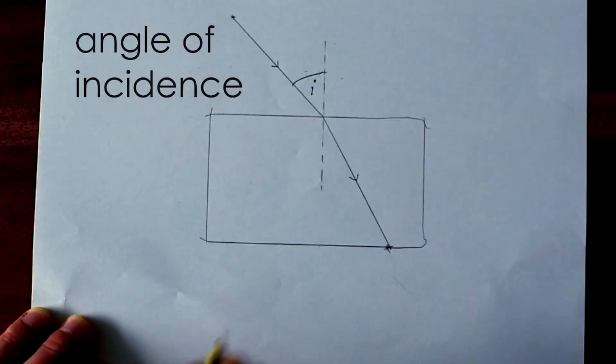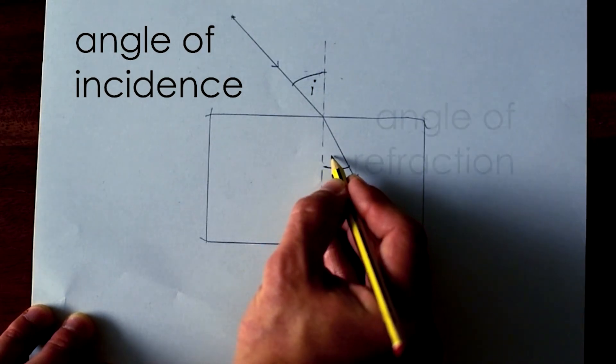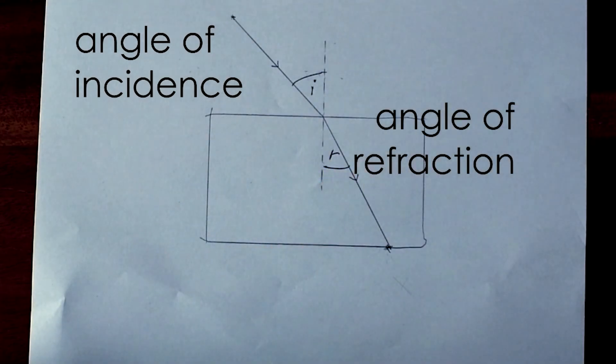So there is where my ray went in and travelled through the block as well. This is the angle of incidence, so I'm going to call it I. And this is the angle here of refraction, so I'm going to call that R.